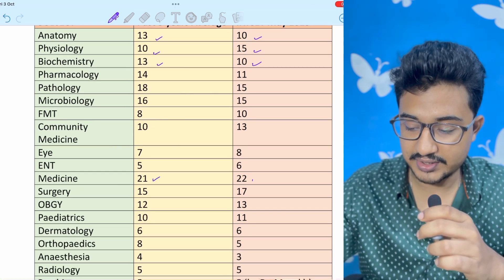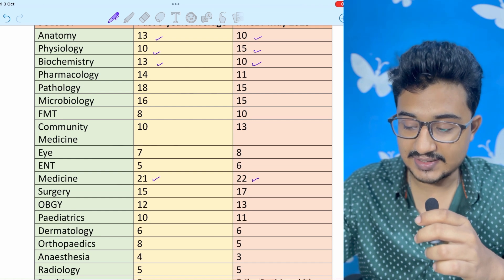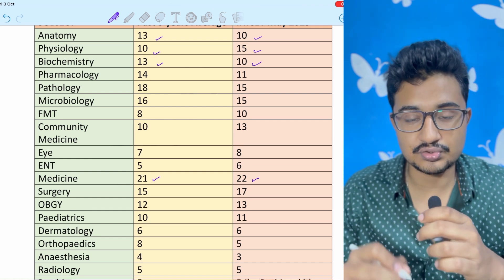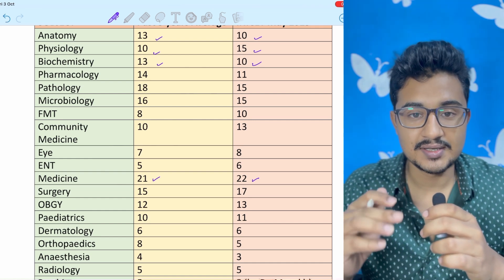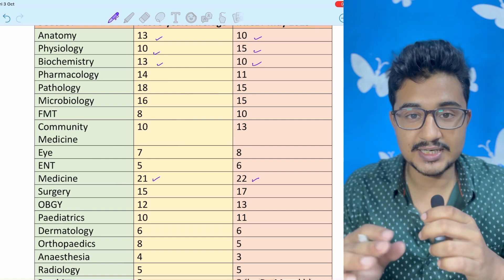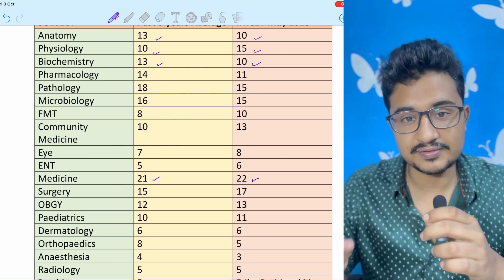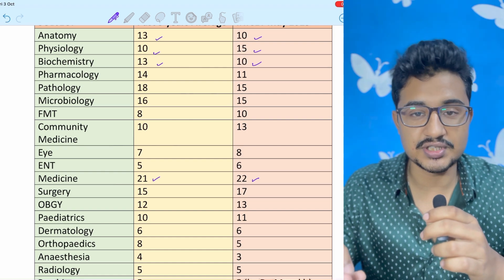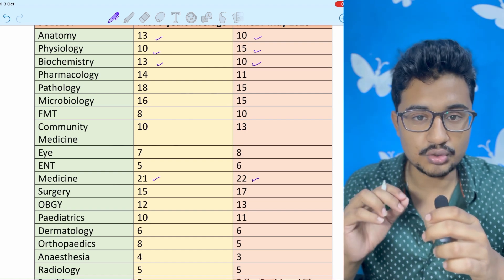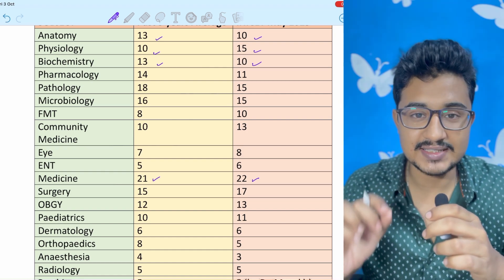Medicine is very much important, 21 questions and this time it came to be 22 questions. So don't neglect medicine. Medicine is short but don't leave it in short. That is the integration of pathology, physiology, pharmacology and all. Don't leave medicine for INICET at least.